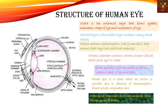The fovea centralis contains most of the cone cells — not the rod cells. The blind spot is the point where no vision is possible due to the absence of photoreceptors. There is one particular point in the entire human eye called the blind spot where, due to the absence of photoreceptors, no vision is possible. The optic nerve is the most important structure — it transmits electrical impulses from the retina to the brain.